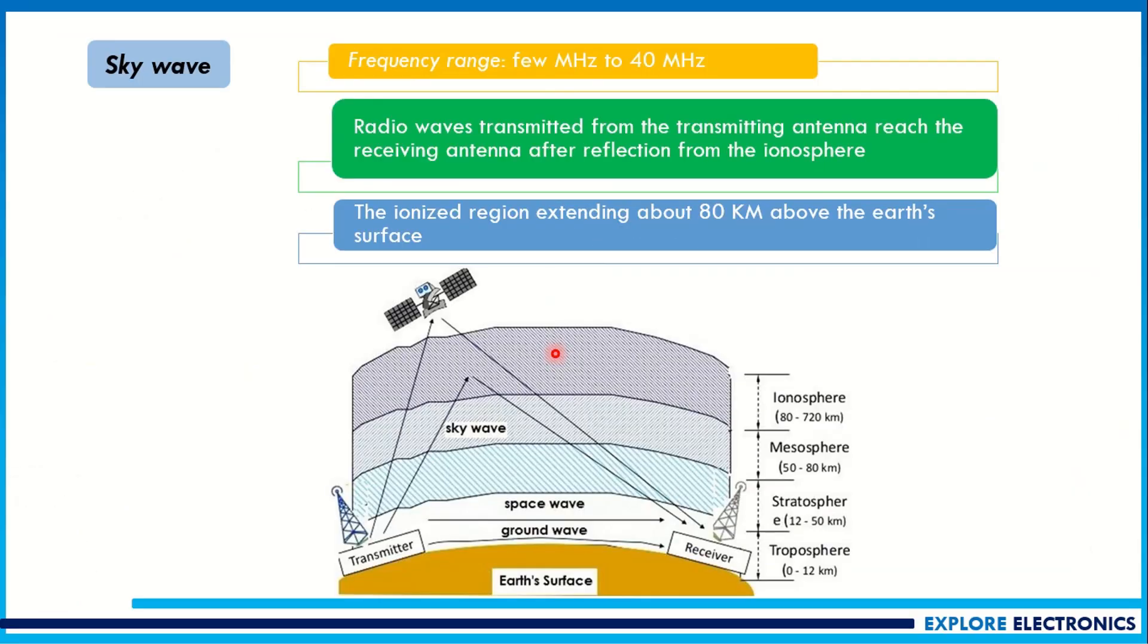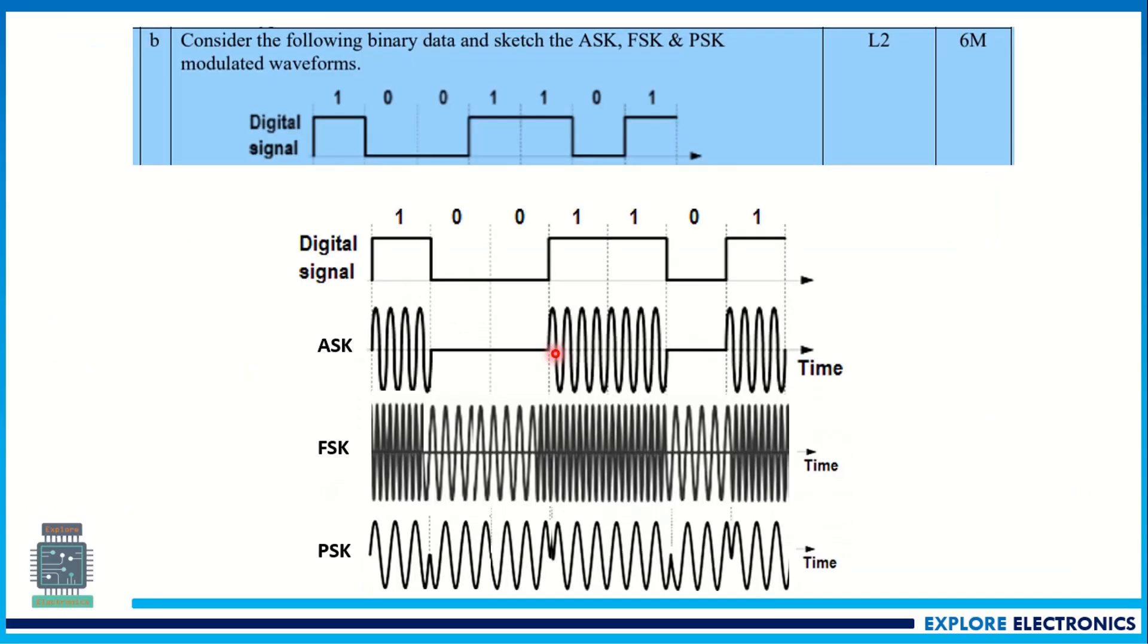So this is about the different waves, radio waves. And the next question is: consider the following binary data and sketch the ASK, FSK, and PSK modulated waveforms. Here they have given the digital signal. For this signal if we do the ASK, what is the output? FSK, what is the output? And PSK, what is the output?